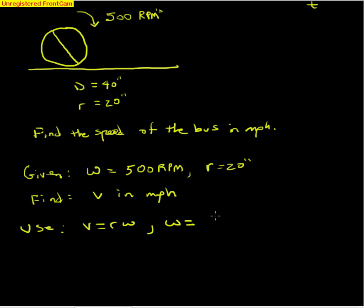Let's convert that. Omega is 500 revolutions per minute, and it's really easy to convert that into radians per minute because we know that there's 2π radians for every one revolution. So the revolutions cancel, and we're left with 1000π radians per minute.